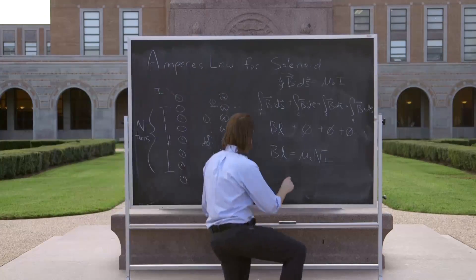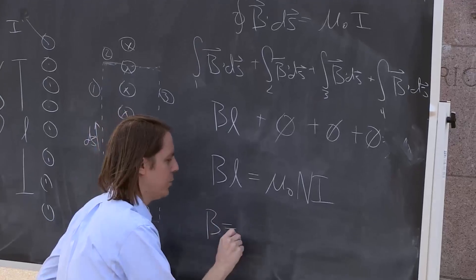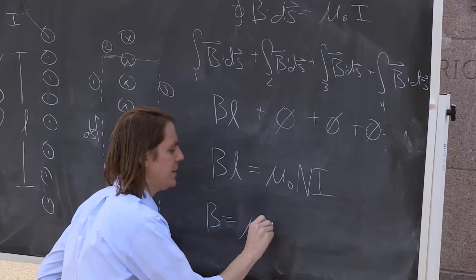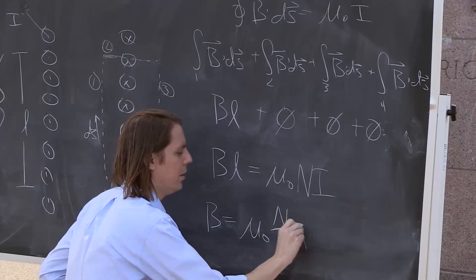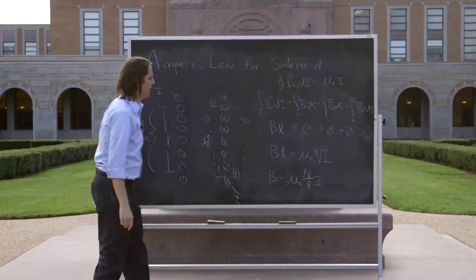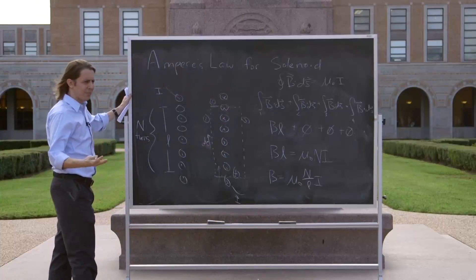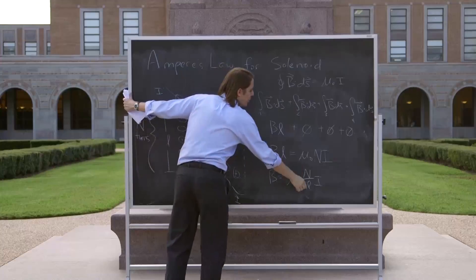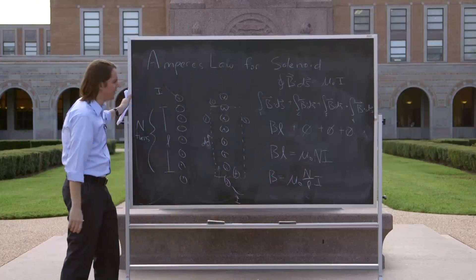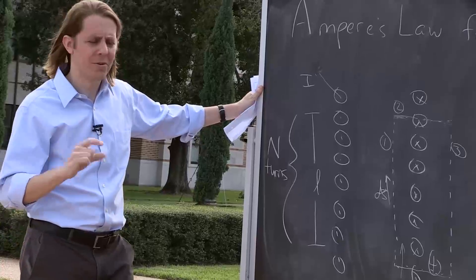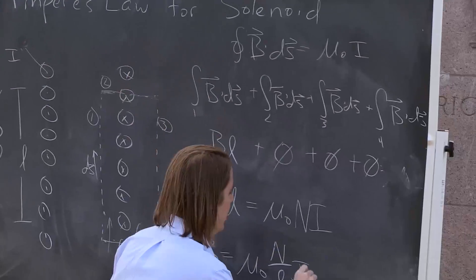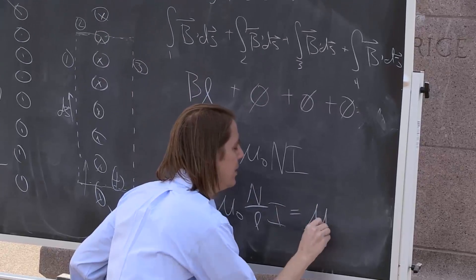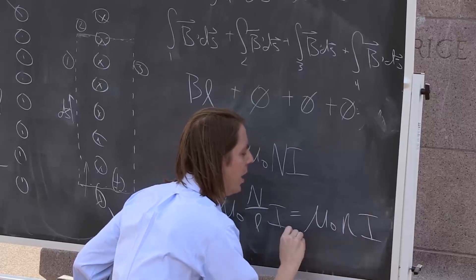So now we can then say, the B field inside the toroid is mu naught big N over L times I. So it only depends on the permeability of free space, the current in the solenoid, the number of turns per unit length, the density of turns. Actually, we often give that its own little variable. We call that little n. So the answer usually you'll see is mu naught little n I.